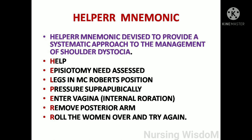The HELPERR mnemonic provides a systematic approach to management of shoulder dystocia: H for Help, E for Episiotomy, L for Legs in McRoberts position, P for Pressure suprapubically, E for Enter vagina (internal rotation), R for Remove posterior arm, and R for Roll the woman over and try again (all fours position).